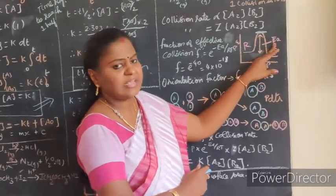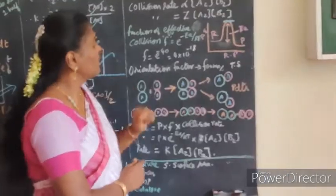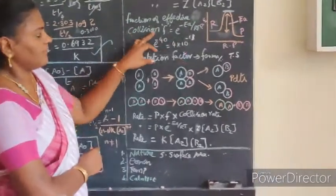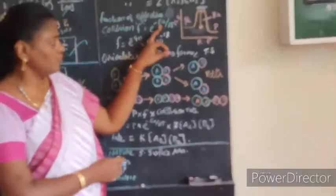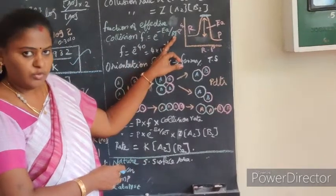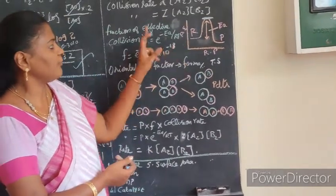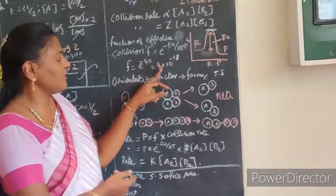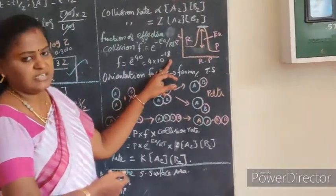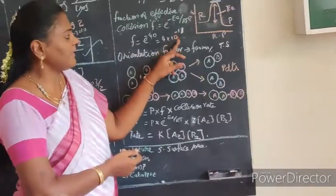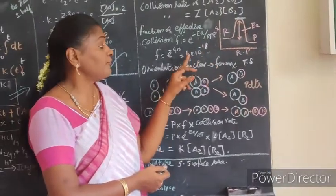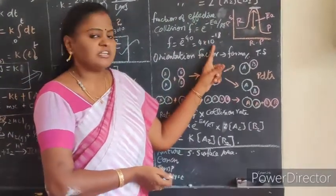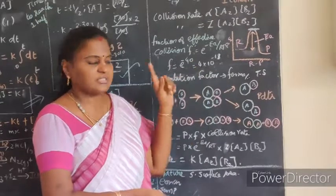If EA is taken as 100 kJ/mol, with R = 8.314 and temperature 300 K, calculating e^(-Ea/RT) gives e^(-40) as the answer. e^(-40) means 4 into 10^(-18). That means for every 10^18 collisions, only 4 collisions are effective.